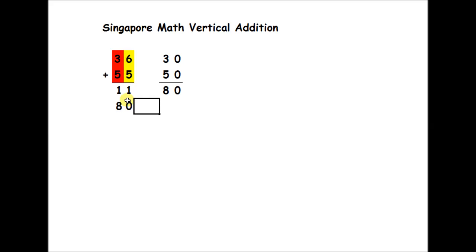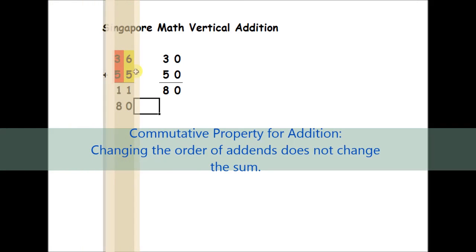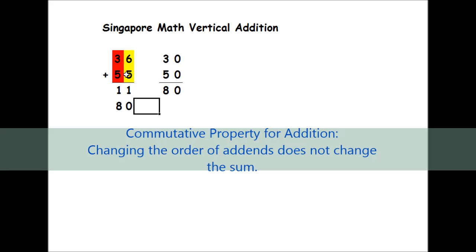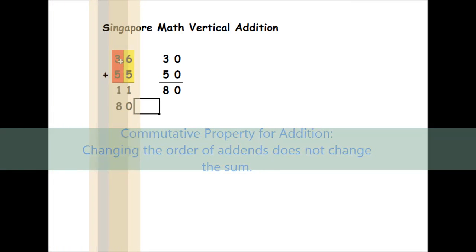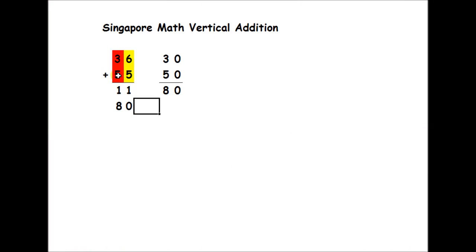Now, because addition has the commutative property effect, where it doesn't matter which ones you add, the sum is always going to be the same. If you wanted to, you could have started with the tens column first. You could have started with 30 plus 50, and then do 6 plus 5.